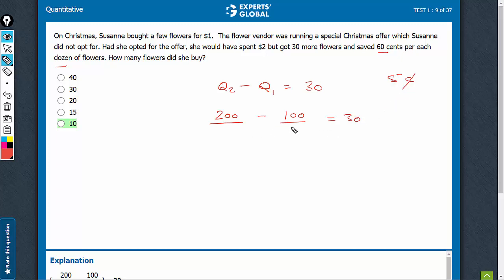And therefore, if the price here is P, in this case, the price would be P minus 5. She would have saved 5 cents per flower. So, this is one equation, one variable. You can solve it. Or, intuitively, you can put values.